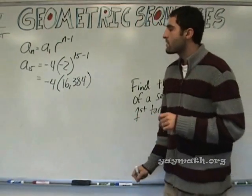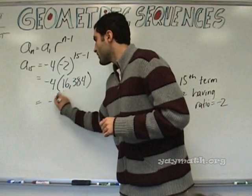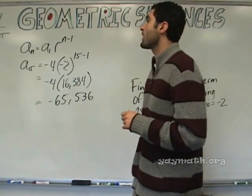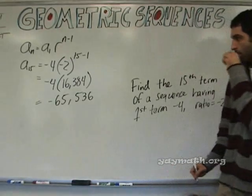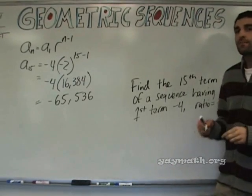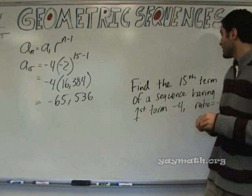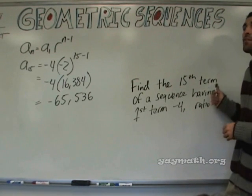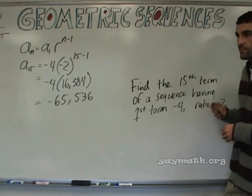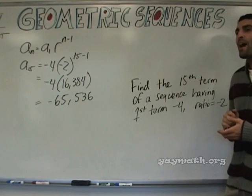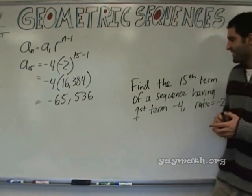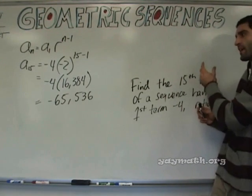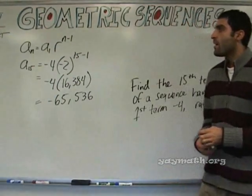Multiply by negative four: sixty five thousand five hundred thirty six. Now is it going to be negative or positive? You have to put parentheses around the negative two in your calculator and think carefully. First term negative, third term negative, fifth term negative - correct. He lies - he's not really British. I'm a Canadian! In a geometric sequence you can progress from negative to positive to negative to positive if r happens to be negative.